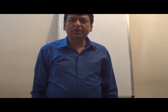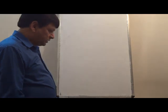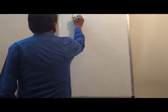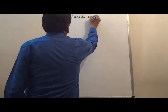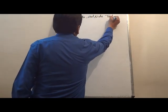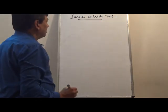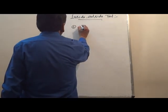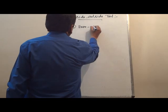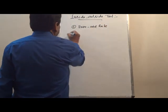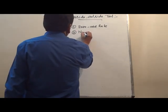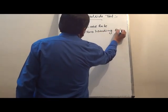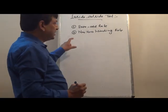Today's topic is the Inside-Outside Test. This test is used in filling algorithms. It has two categories: one is the Even-Odd Rule and the second is the Non-Zero Winding Rule.